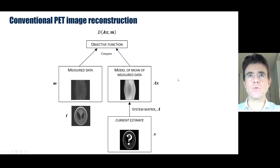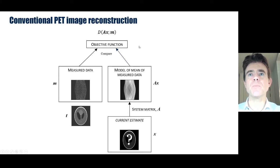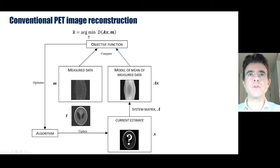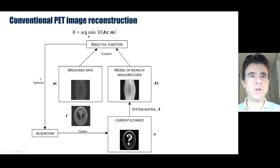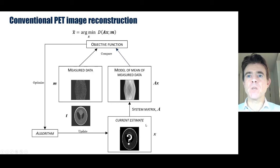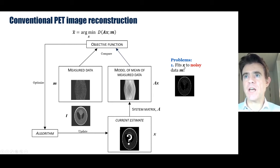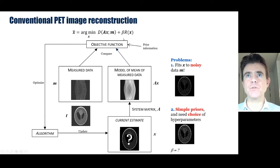For PET, reconstruction is nearly always based on a Poisson log likelihood expressed as an objective function — a discrepancy or distance measure between the forward model AX and the measured data M. This is the Kullback-Leibler divergence for Poisson log likelihood. We find an X that minimizes this discrepancy, called X hat, using an iterative optimization algorithm. The problem is that data are noisy, so we're fitting X to a noisy dataset, often resulting in noisy reconstructions, which is why we need prior information added as a penalty.